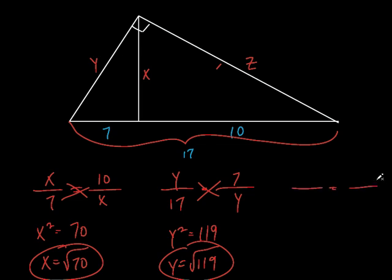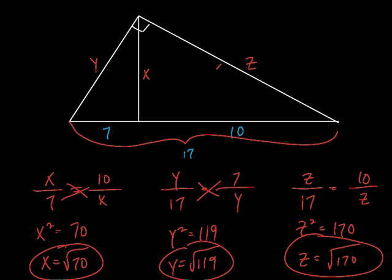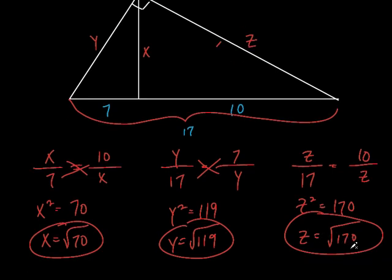Let's do Z. Z is a geometric mean between the whole hypotenuse, 17, and the segment closest to Z, which is 10. So Z squared equals 17 times 10, which is 170. Z equals the square root of 170. I want you to write your answers like this — don't plug it into a calculator.